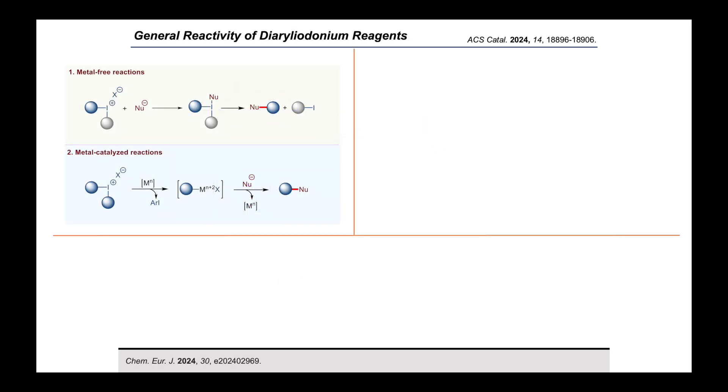As we are extensively working in hypervalent iodine chemistry, more specifically diaryl iodonium reagent, I want to focus on different reactivities of diaryl iodonium reagent in organic synthesis. In case of metal-free reactions, diaryl iodonium reagent in presence of a nucleophile forms a T-shaped intermediate. Then the ligand exchange coupling between nucleophile and iodotelluric aryl ring produces nucleophile-aryl coupling product and iodobenzene as the byproduct.